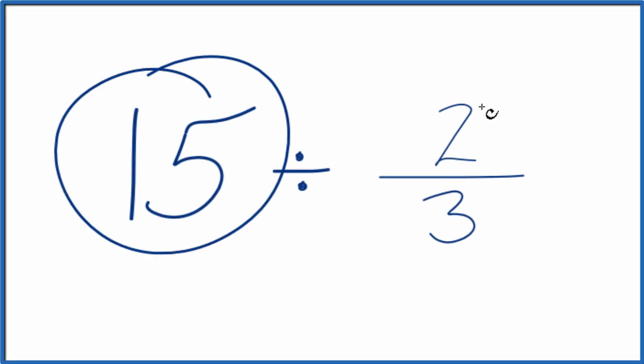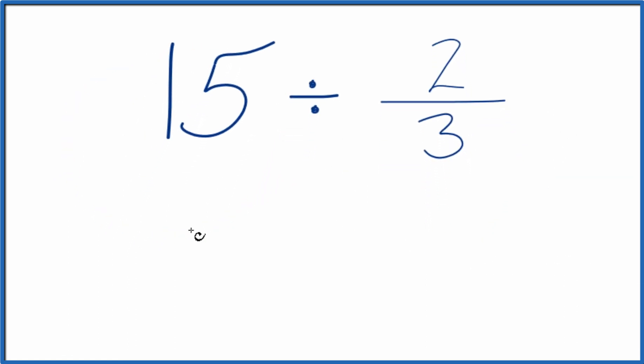Let's divide 15 by 2 thirds. Here's how you do it. So instead of 15, let's call this 15 over 1. It's still 15, we're just dividing by 1. And now we have a fraction.